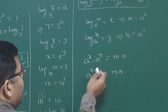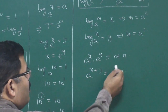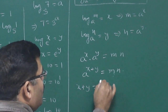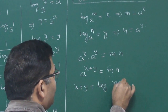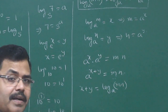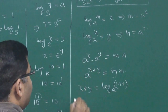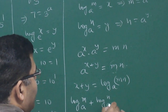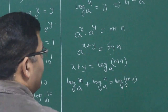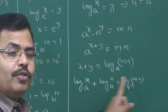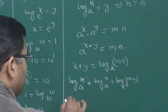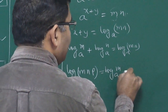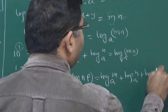By the definition of logarithm — if a to the power x equals y, then x equals log of y to the base a — the power equals the log of the right-hand side to the base a. So x plus y equals log of m·n to the base a. Since x was log m to the base a and y was log n to the base a, this proves that log(m·n) to the base a equals log m to the base a plus log n to the base a. Similarly, log(m·n·p) to the base a equals log m + log n + log p to the base a.